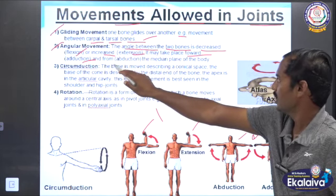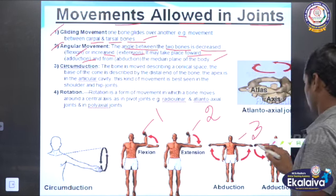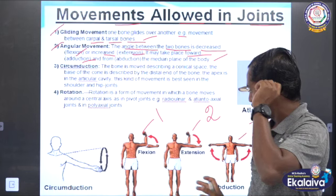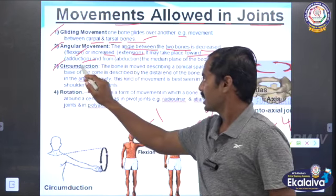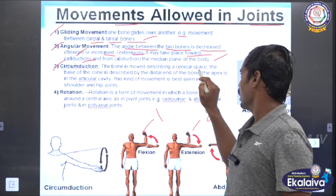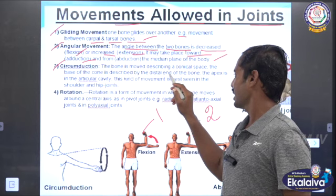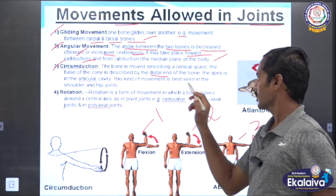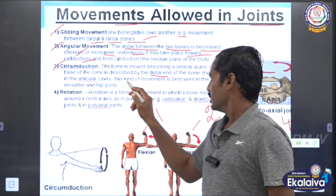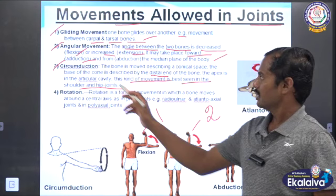Adduction and abduction occur relative to the median plane of the body. Number three: circumvention — the bone describes a conical space. The base of the cone is described by the distal end of the bone, and the apex is at the joint articulation. This kind of movement is best seen in the shoulder and hip joints.